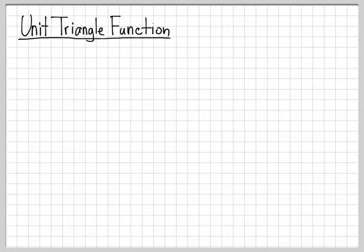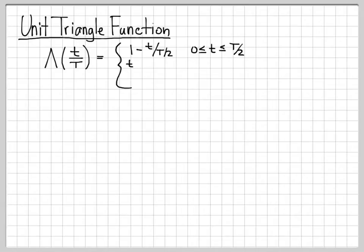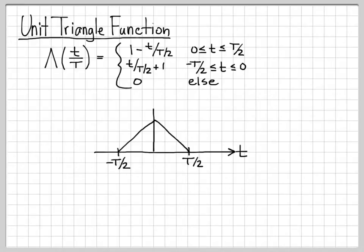Let's talk about the unit triangle function. The unit triangle function uses the notation Λ(t/T). The notation is similar in that the denominator, capital T, tells us the total width of the signal. When we write this function out as a piecewise function it's a little ugly, but if we plot it, it's a very simple function. The total width goes from −T/2 to T/2, and it looks like a triangle over this time interval. It has a peak of 1 — that's why we call it the unit triangle function — and that peak occurs at time equal to 0.